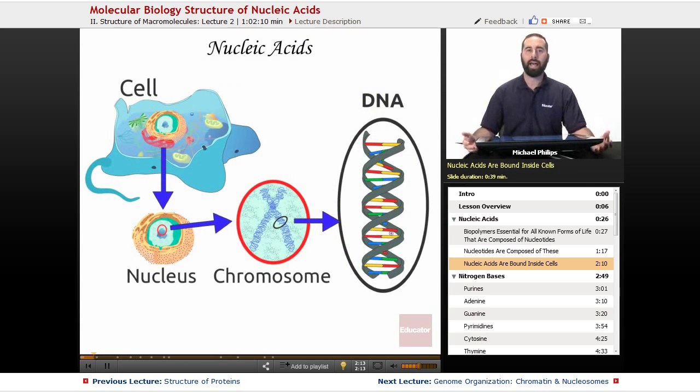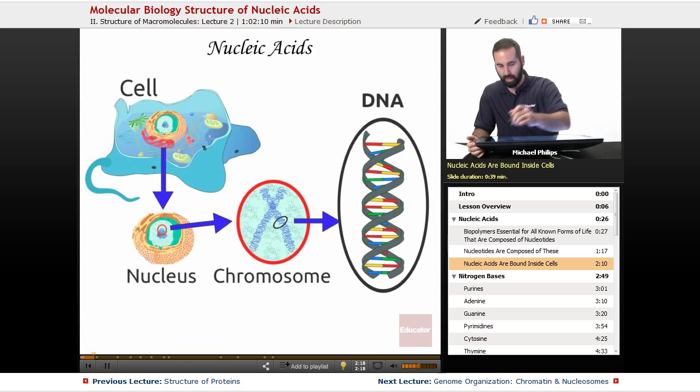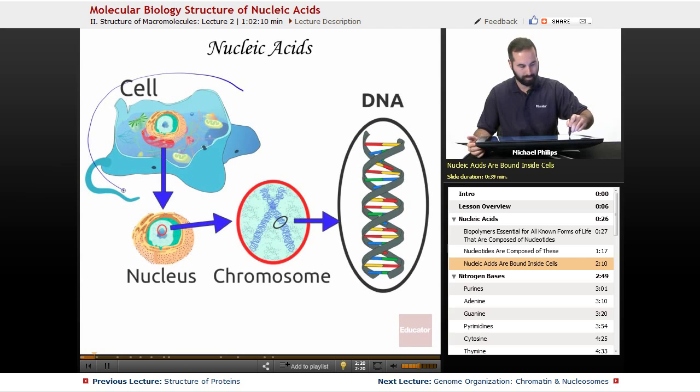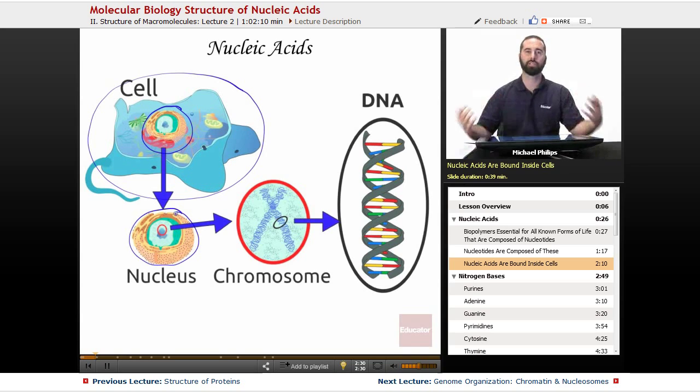Now nucleic acids are found inside cells. And if we see a eukaryotic cell right here, what we can zoom in on is the nucleus. Now the nucleus is what houses our chromosomes, and remember our chromosomes are made up of DNA, and DNA is a nucleic acid. Inside the nucleus, we can also find RNA, as well as in the cytoplasm, we will find RNA as well.